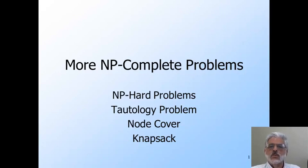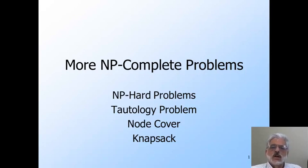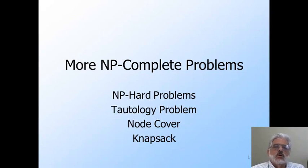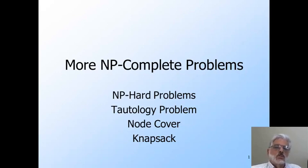If you encounter a problem in your work and can't come up with an efficient solution, there is a good chance that you can devise a reduction that proves it NP-complete. That proof guides your thinking. You need to consider whether you need to solve the problem in all its generality, or whether a simple or special case would give you what you need. You also need to consider efficient algorithms that offer an approximation to what you really want. Without the assurance that the problem is NP-complete, you are less likely to want to attempt, or to justify to your boss, taking one of these simplifying steps.